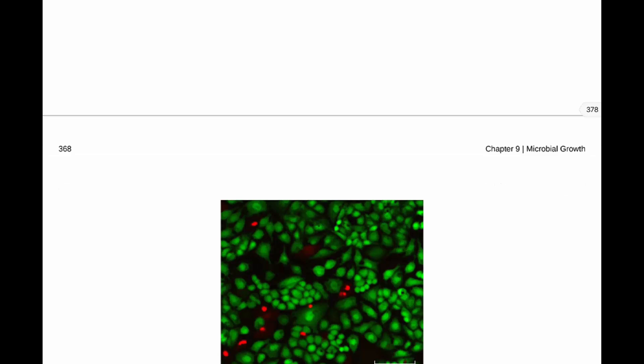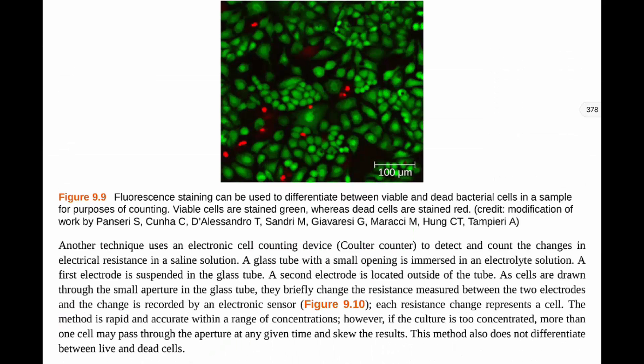Looking at this image of fluorescent staining, you can differentiate between live cells — shown in green, because the stain passes through the intact cell membrane — and dead cells, shown in red, because their membrane has been destroyed. You can then count these cells the same way, setting a grid over the area, counting the number of viable cells, and performing the same types of multiplication to estimate concentration.